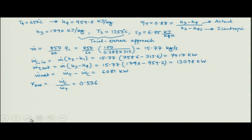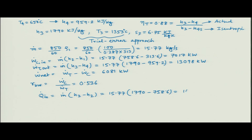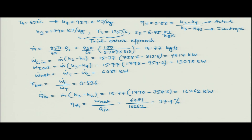For thermal efficiency, Q_dot_in = m_dot × (H_3 - H_2) = 15.77 × (1790 - 758.6) = 16262 kW. Thermal efficiency = W_dot_net / Q_dot_in = 6081 / 16262 = 37.4 percent. That is the solution for this actual Brayton cycle problem.